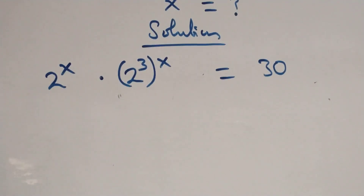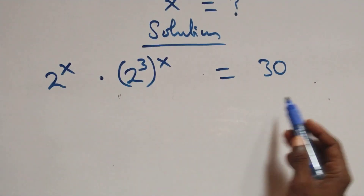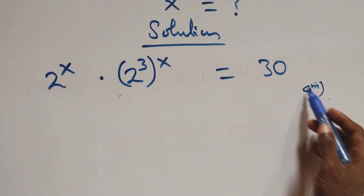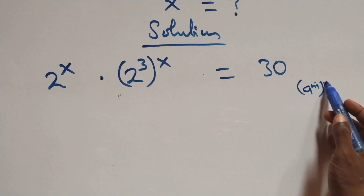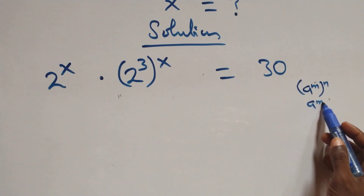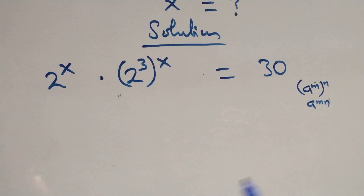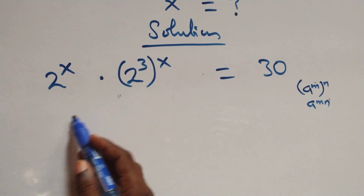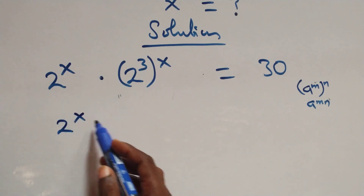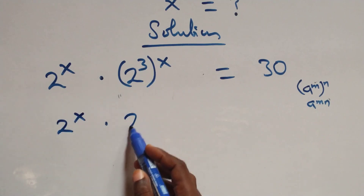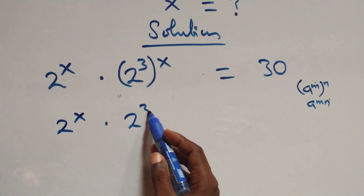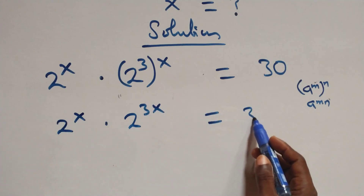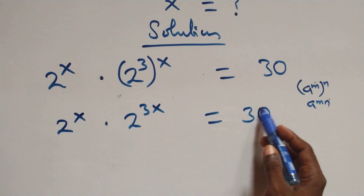The next step here is as follows. When we have a raised to power m, raised to power n, this is the same thing as a raised to power mn — the powers multiply. So we have 2 raised to power x times 2 raised to power 3x equals to 30 on this side.